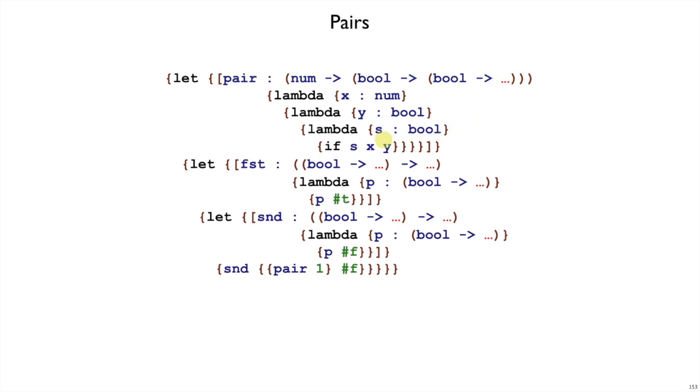So it turns out that the type system that we have in place doesn't let us encode pairs, at least not pairs that have numbers and booleans, whereas encoding pairs that have numbers and booleans was no problem before we had a type system.